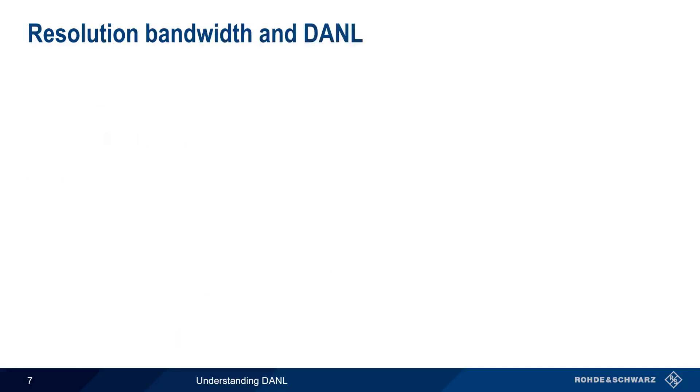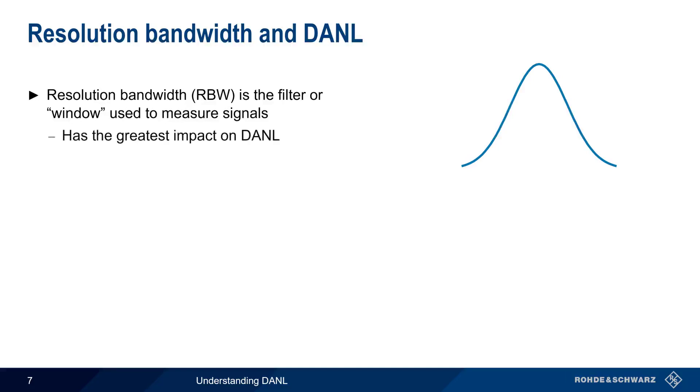As you should already know, resolution bandwidth refers to the filter or window that's used when measuring signals with a heterodyne-based spectrum analyzer. Resolution bandwidth is also the user setting with the greatest impact on DANL. Using a narrower resolution bandwidth reduces the amount of noise energy in the measured signal, and this in turn will lower the analyzer's DANL.